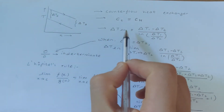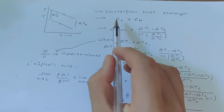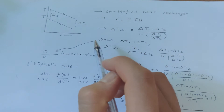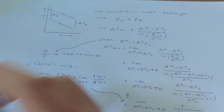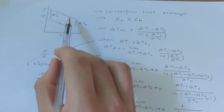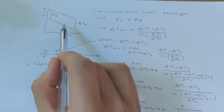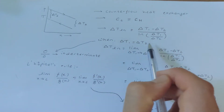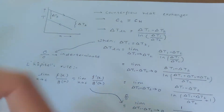The special condition here is what happens to the logarithmic mean temperature when Delta T1 is equal to Delta T2. This is possible when the heat capacity rate of the cold fluid and the heat capacity rate of the hot fluid are equal. When they are equal, the amount by which the temperature of the hot fluid decreases equals the amount by which the temperature of the cold fluid increases, making Delta T1 equal to Delta T2.